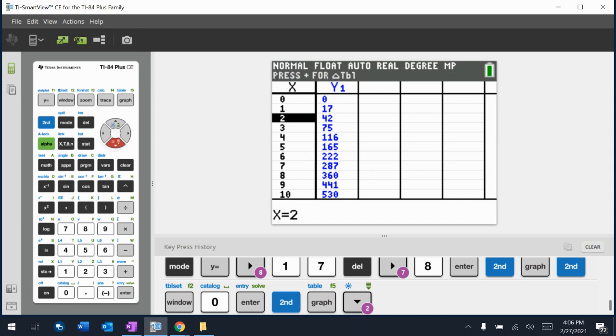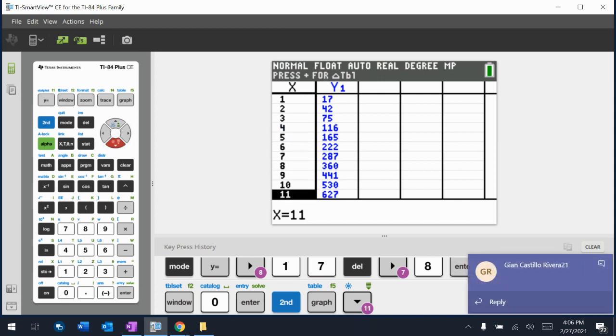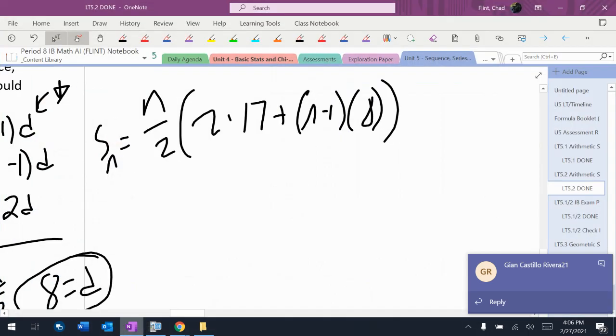So it wants to know how many can I put in there until I get a maximum of 550? Well, if I put in 10 then I have 530. If I put in 11 I have 627.